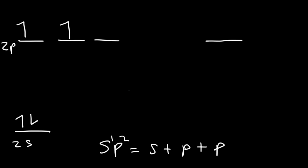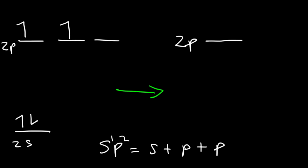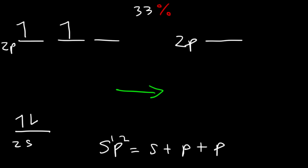That means one p orbital will remain after hybridization — the unhybridized 2p orbital stays at the same energy. For the sp2 hybrid, one out of three orbitals is s, giving us 33% s character, and two out of three is p, which is about 67% p character. So we still have more p character than s, and therefore the sp2 hybrid orbital should still be closer to 2p than 2s.